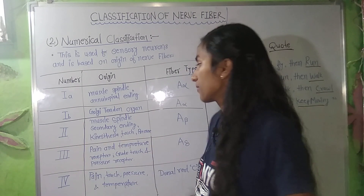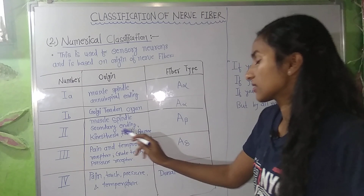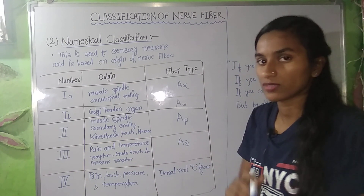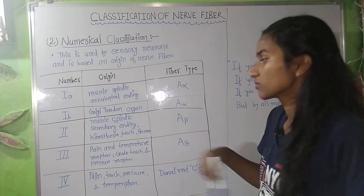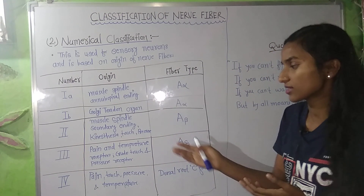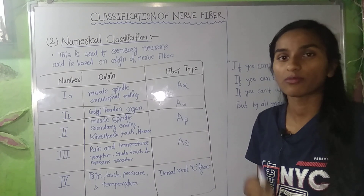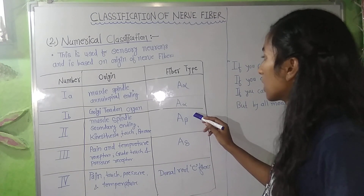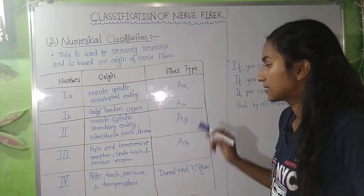The second number's origin is the muscle spindle secondary ending and kinesthesia receptors, as mentioned in the previous video. It also includes touch and pressure receptors, where these nerve fibers originate. The corresponding fiber type is A-beta.